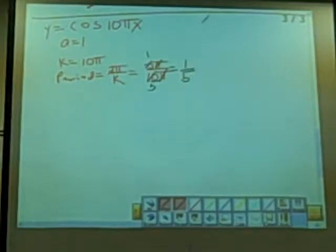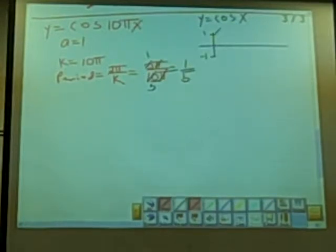So before we start, let's take a look at our original graph for cosine, y equals cosine x. And here's 1, negative 1. And this is before any shifting or any stretching or anything.